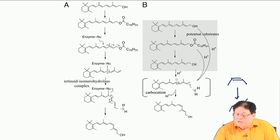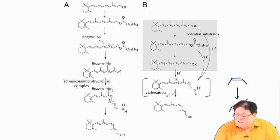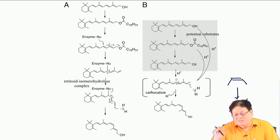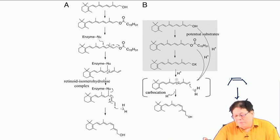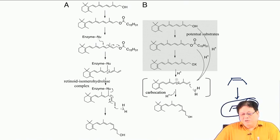In the excited state there is essentially a single bond, which allows rotation. It then releases the light energy and goes to the trans form. That is the mechanism by which light incident on rhodopsin drives the cis-to-trans isomerization.